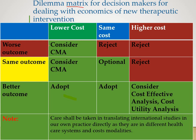Suppose the targeted outcome may be worse, the same, or better in terms of clinical management of a particular disease. The types of outcomes may be clinical, humanistic, or economic. If you are targeting clinical outcome, that clinical outcome may be worse, the same, or better in terms of clinical success rate.